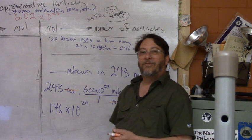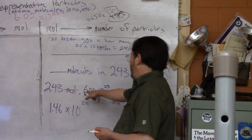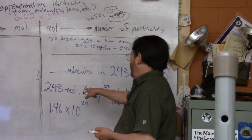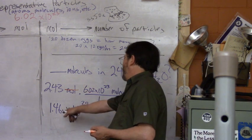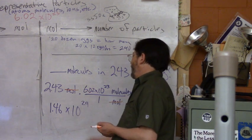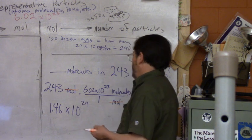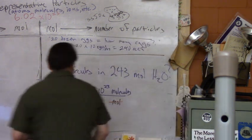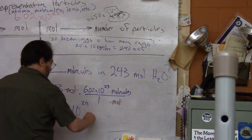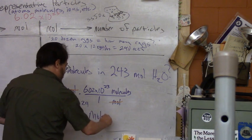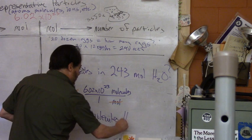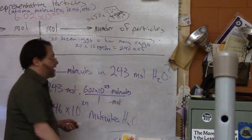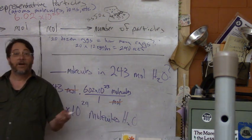So going up one more power of 10 plus a little change, that seems about right. If it was exactly 2, it would be like 1.204 times 10 to the 23rd, so that accounts for a little bit more and it's all good. 1.46 times 10 to the 24 molecules of H2O.